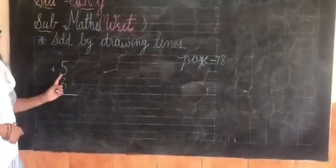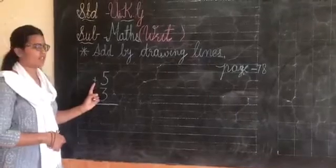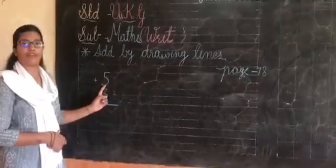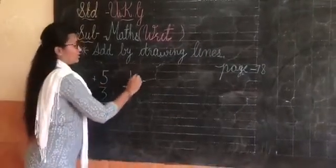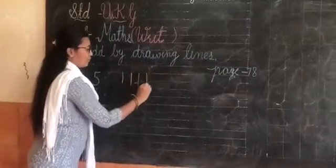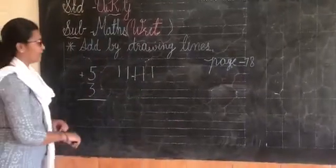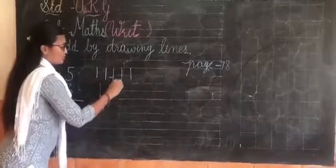Which number is this? 5 and 3. This is the symbol of addition. So we have to first draw 5 lines. 1, 2, count with me, 3, 4, 5. Then which number is this? 3. 1, 2, 3.